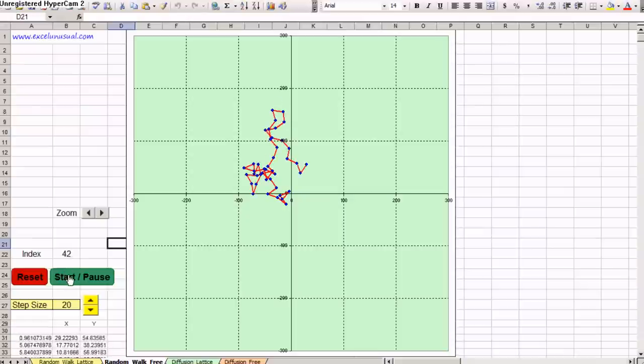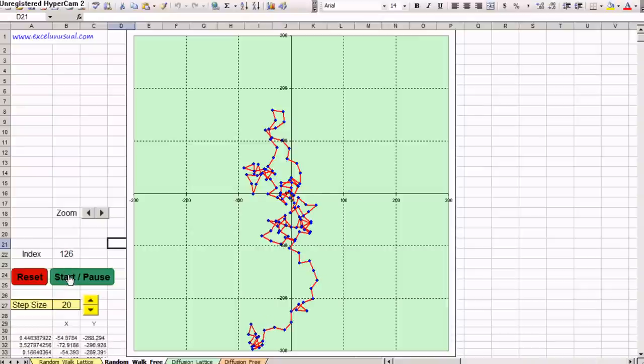This is also called the drunk man animation. Essentially if a man is extremely drunk, it will move incoherently and every step will be uncorrelated to the previous one. That's what happens here.